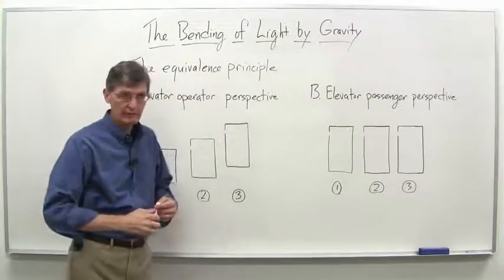I wanted to do one more example with the equivalence principle because it comes directly into the history of Einstein. It's the bending of light by gravity. Again, the equivalence principle says if we analyze something in an accelerated frame of reference, then the results should apply, if we've done things correctly, to the situation of a gravitational field.